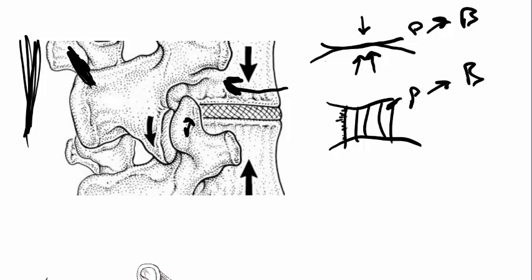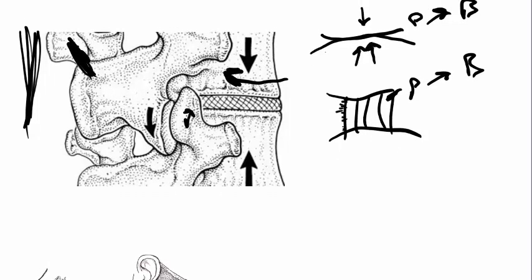Now there's a lot that happens after that, as far as once that signal hits the brain. For instance, the brain, when it gets that signal, it tightens up even more to guard or protect. And what does that do? That puts more compression on there and more forced opening on there, which then sends more pain signal to the brain.